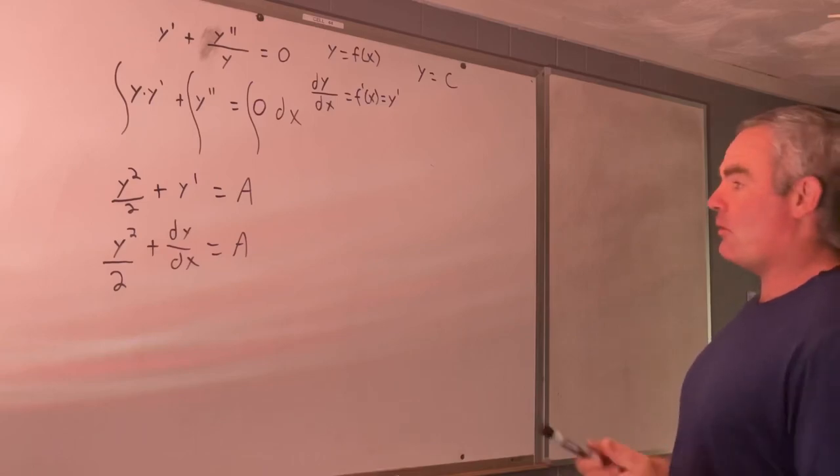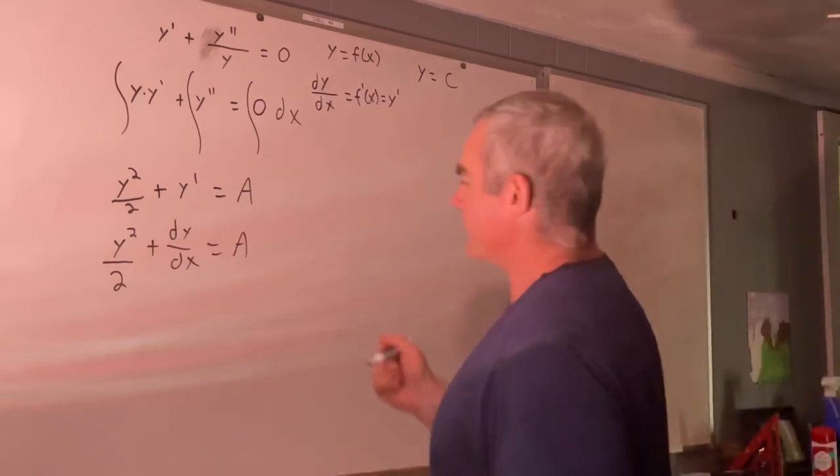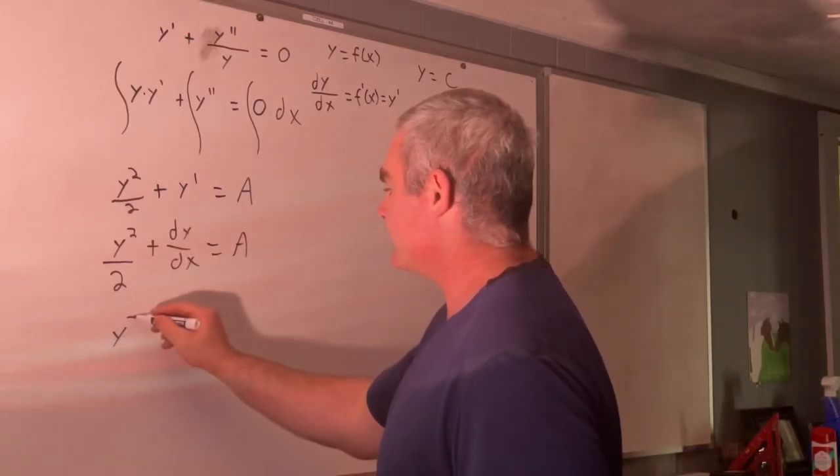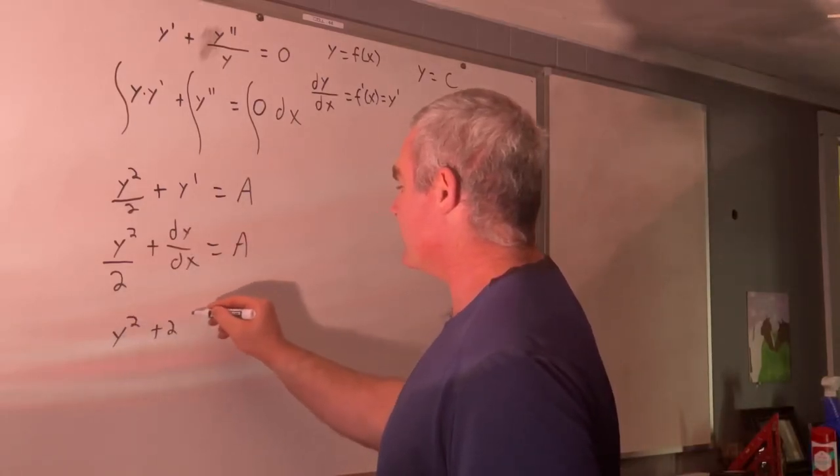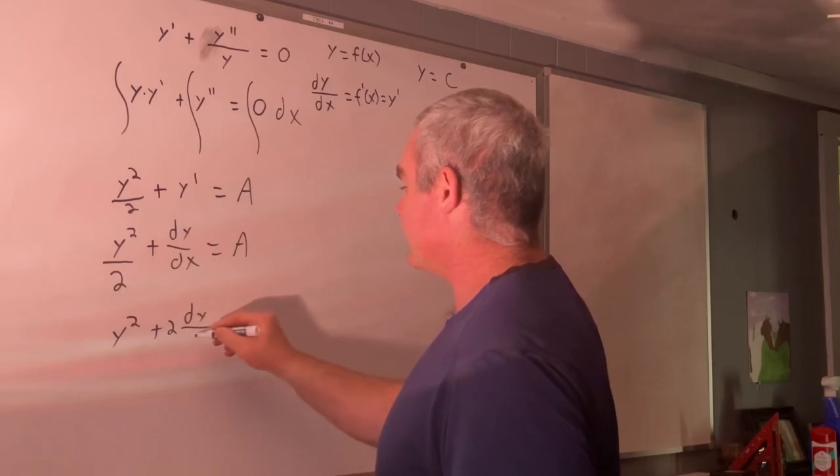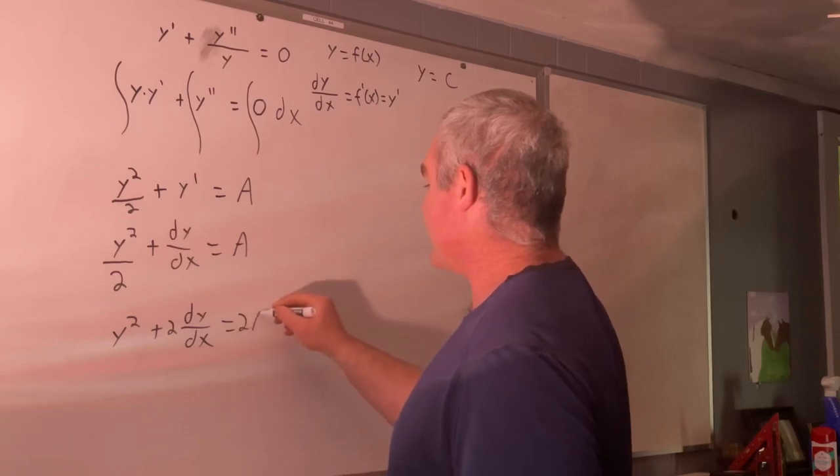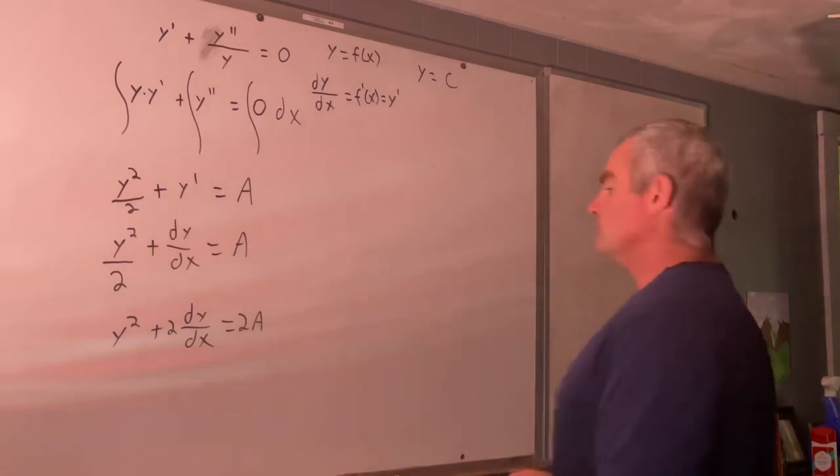So now what? Now, let's just do this step by step. We're going to multiply both sides by two. So y squared plus two dy dx is equal to two a.